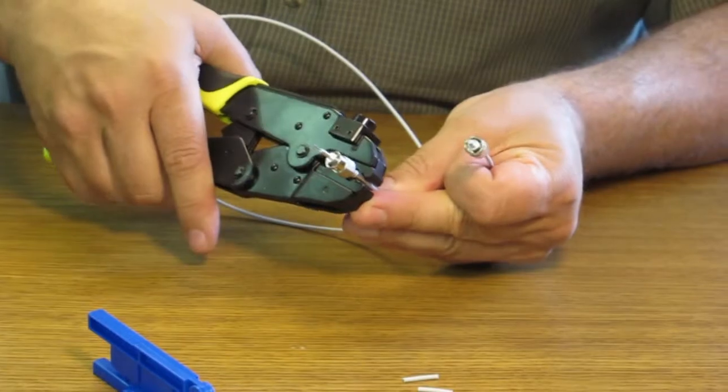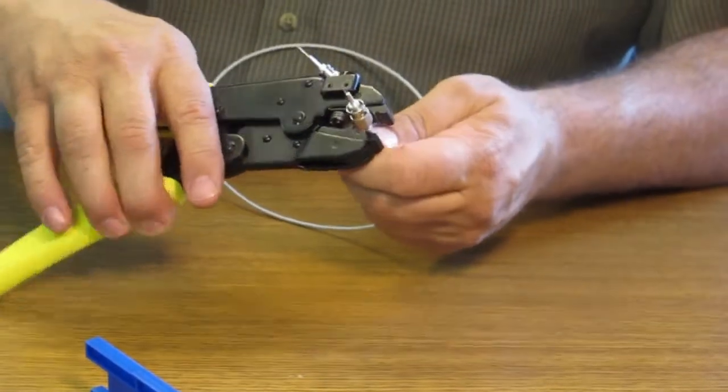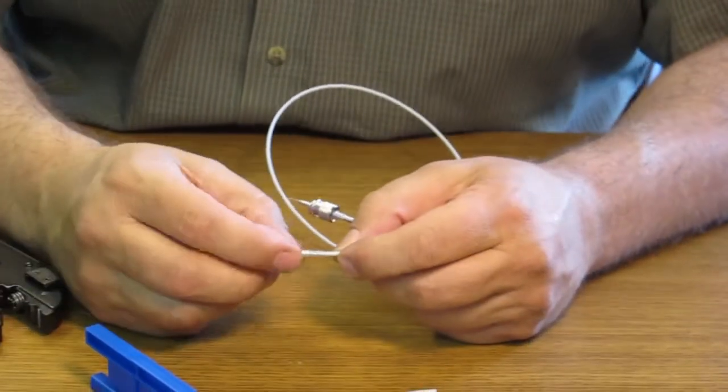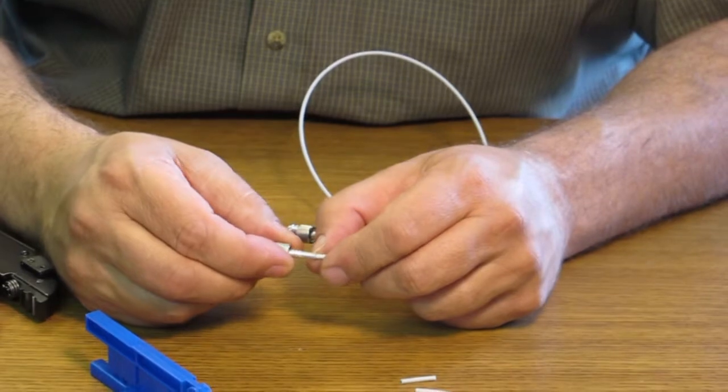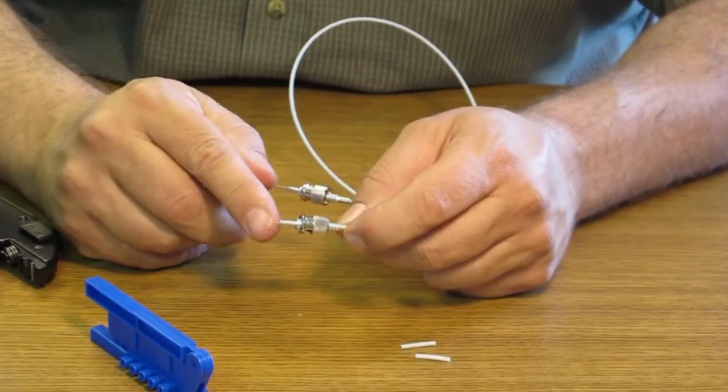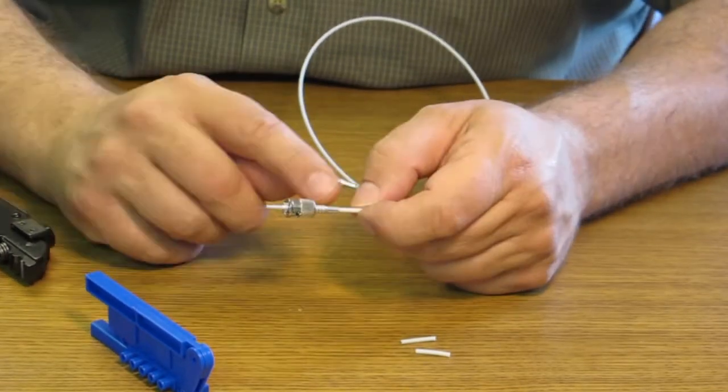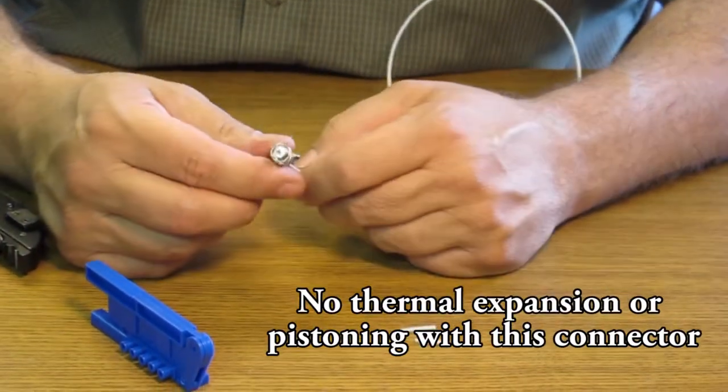Next thing we want to do is we want to crimp the rear portion of the connector onto the jacket itself. So now that the connector is completely held onto the cable. The outside of the cable is crimped on the back of the connector. The fiber is crimped on the front side so there's no thermal expansion or pistoning that is capable of this connector.